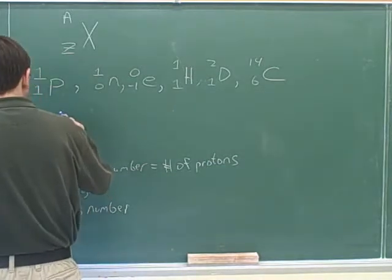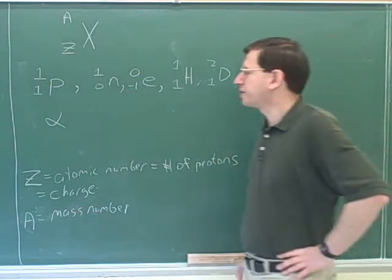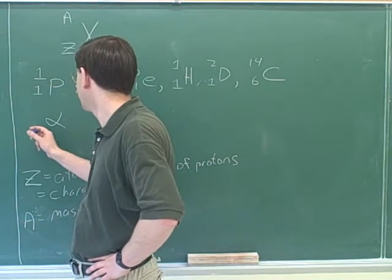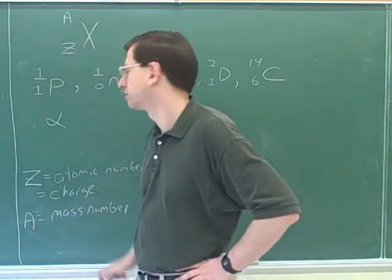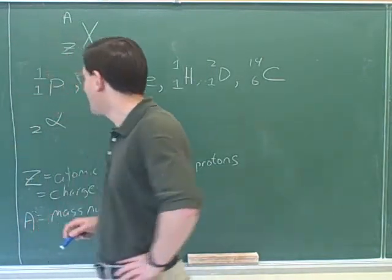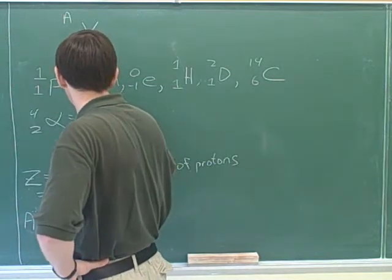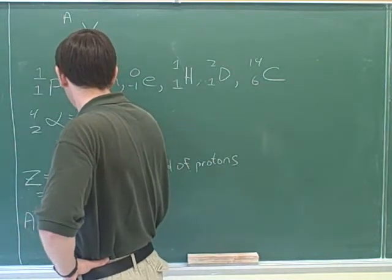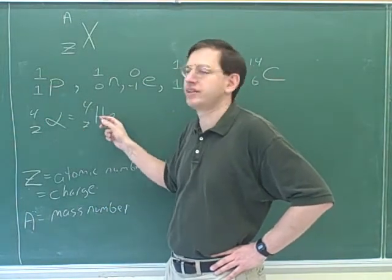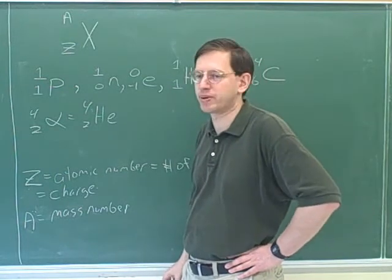One type of particle is an alpha particle. Alpha particles are actually helium nuclei, so the Z number is two, and helium nuclei have a mass number of four. There are two ways to write an alpha particle: you could write it with the symbol alpha, or you could write it with the helium symbol. These are the same thing.